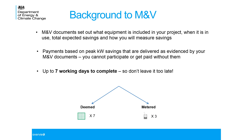In terms of the measurement and verification approaches in the pilot, there are only two options: either the deemed approach or the metered approach. The deemed approach applies if your project includes one of the seven eligible technologies — you can use a spreadsheet to enter the details of your existing and replacement equipment and it will automatically calculate the savings for you. If your project doesn't include one of those seven technologies, or if you simply prefer, you can use a metered approach. There are three different versions of the metered approach, covered in videos three and four.